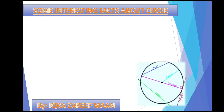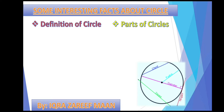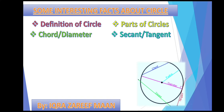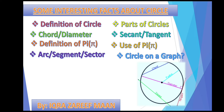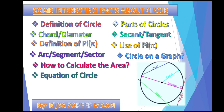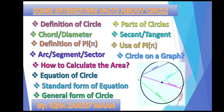The layout of today's lecture is: first, the definition of the circle; parts of the circle; chord versus diameter; the difference between the secant line and the tangent line; the definition of pi and its uses; arc, segment, and sector differences; circle on a graph; how to calculate the area of the circle; and the standard form and general form of the equation of a circle.